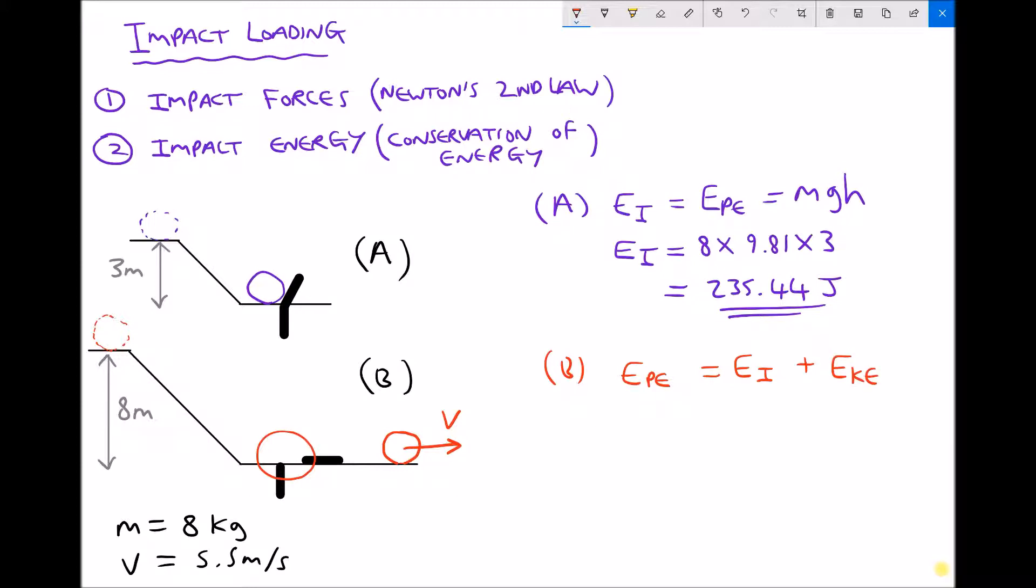We're using our conservation of energy rule. All of the energy at the start, the potential energy, equals all of the energy at the end: the energy absorbed to break our test piece plus the kinetic energy remaining in the object. So we can rearrange that and the impact energy then is just the potential energy at the start minus the kinetic energy at the end.